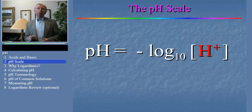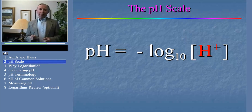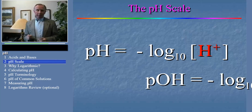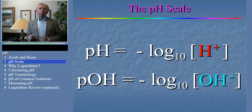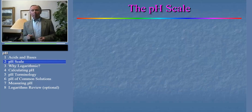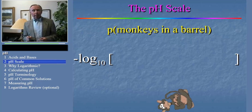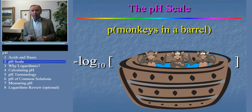So using this kind of shorthand, what do you suppose the pOH of a solution would be? Well, the pOH is the negative log of the hydroxide ion concentration in the solution. Of course, we could use this shorthand to report the value of any number if we wanted to. For example, the 'p monkeys in a barrel' is the negative log to the base 10 of the number of monkeys in the barrel.